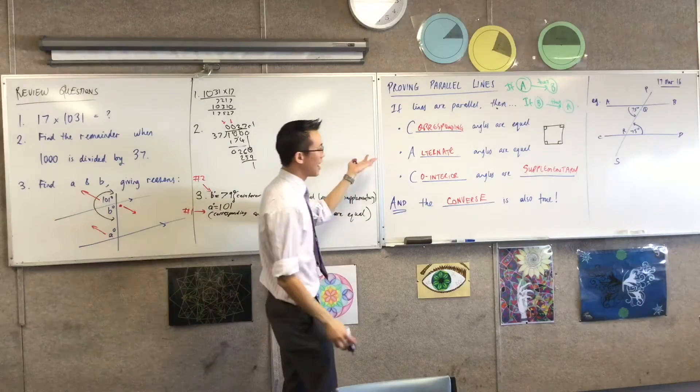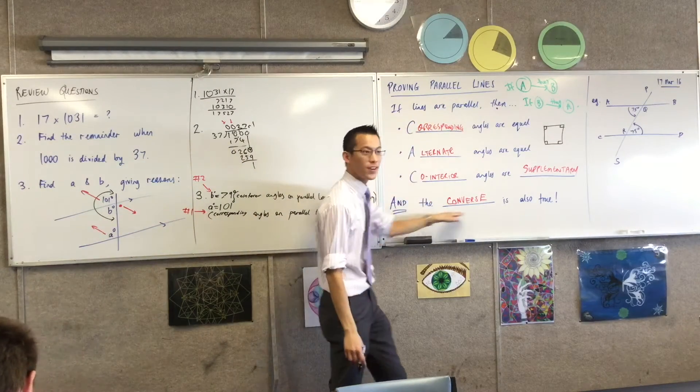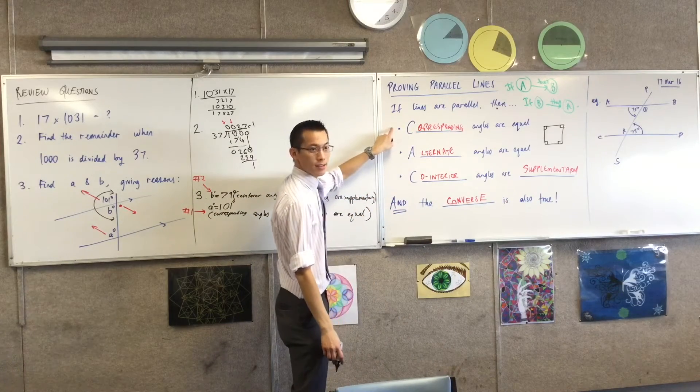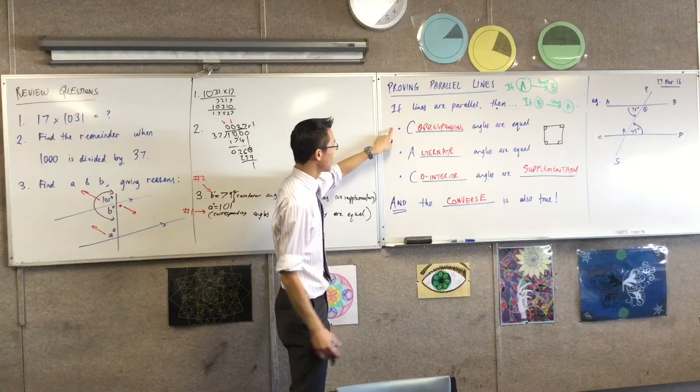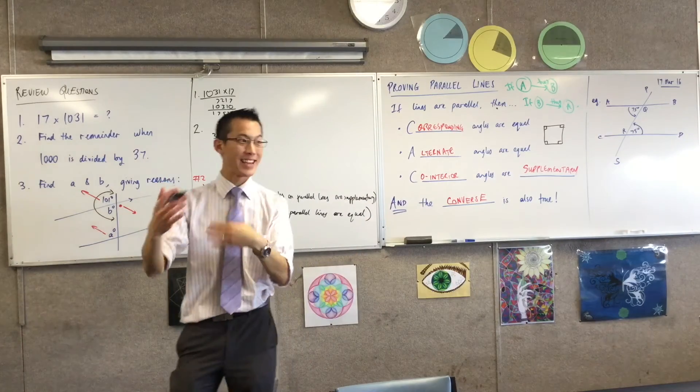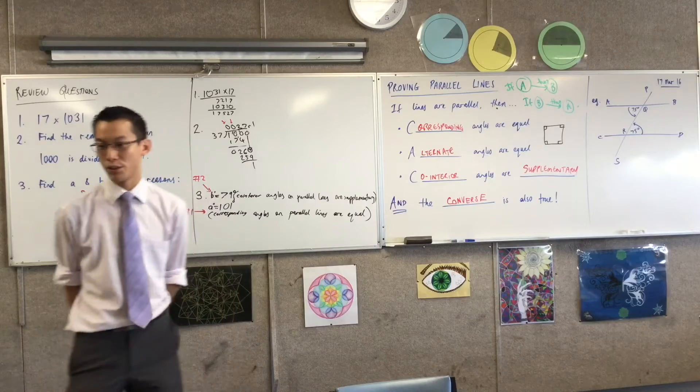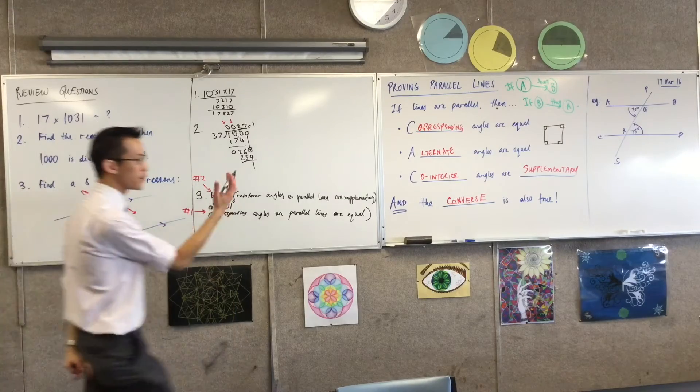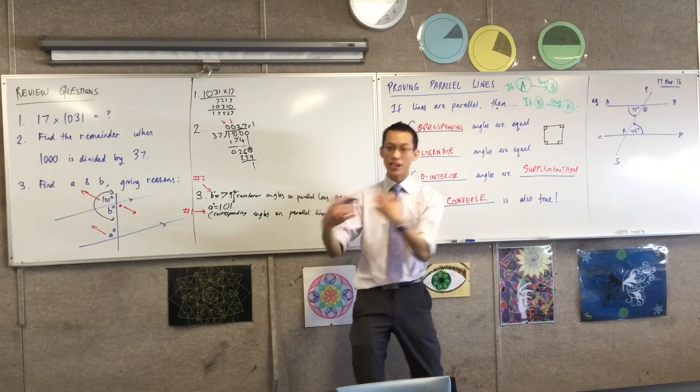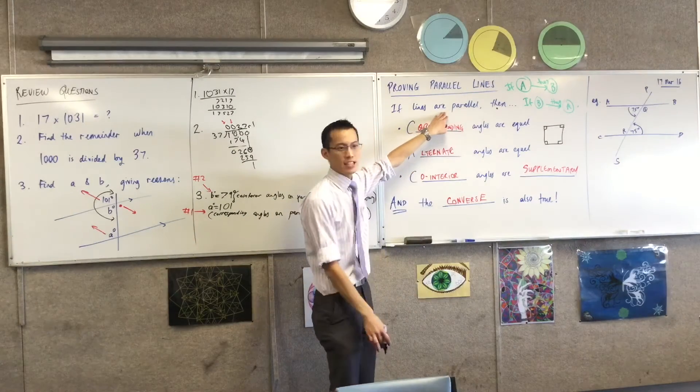But here in parallel lines, and we're going to show it in a second, in parallel lines, the converse is true. If you know any one of these on a pair of parallel lines, then you can say that. If you see alternate angles on a pair of lines, and they're equal, that means you can conclude they're also parallel. If you see co-interior angles, and you look at them, they add up to 180 degrees, then you can conclude the lines are parallel.